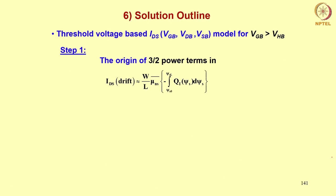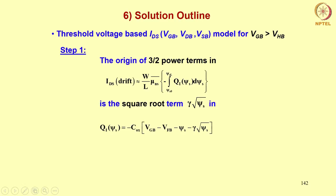Let us see how we go about doing it. The origin of the 3/2 power terms in this expression — this is the basic expression for drift current in the surface potential based model — is the square root term γ√ψs in the expression for qi. This inversion charge has the following formula in the surface potential based model, where you have a γ√ψs term. When you integrate this term in this expression, you get the 3/2 power term.